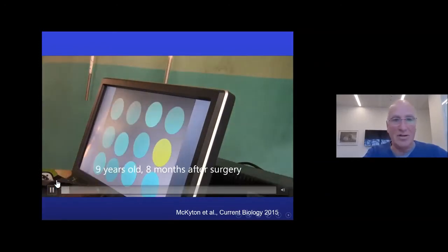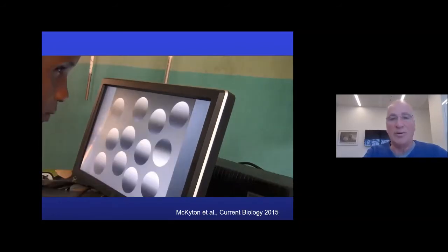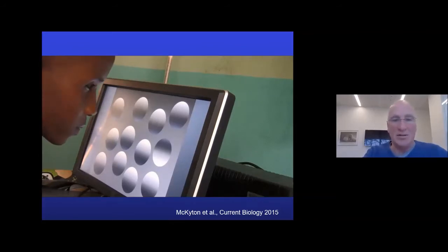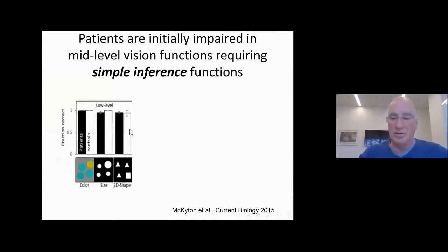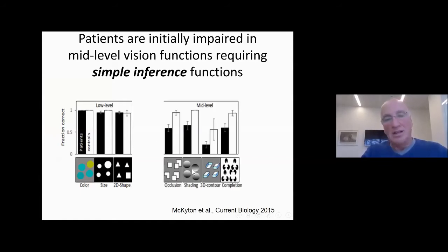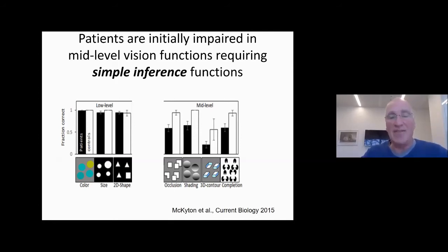They touch the screen — there's no trouble with color. Here's an example of a nine-year-old: when looking at shape from shading, there is trouble. Initially, at least, they have no trouble with low-level cues. But if you look at mid-level cues — finding the odd man out based on shading, 3D contours with these cubes, subjective contours, or occlusion — they're much worse than controls, after imposing the blur on controls to put them on equal ground. They are initially impaired in vision functions requiring simple inference.